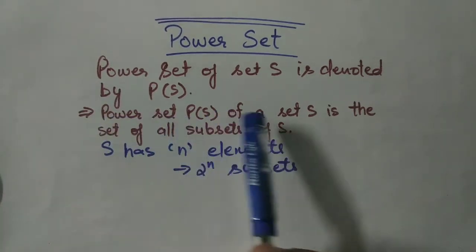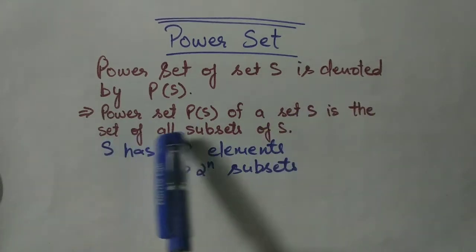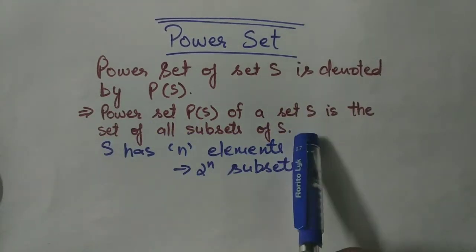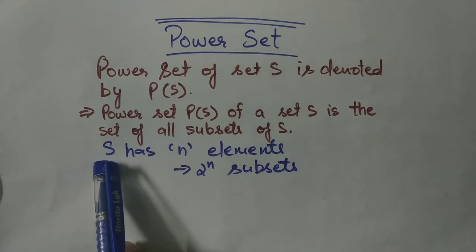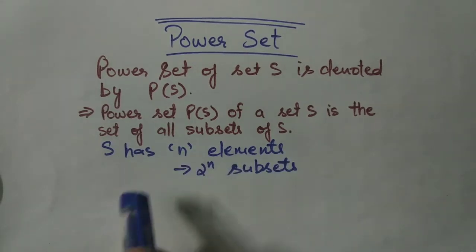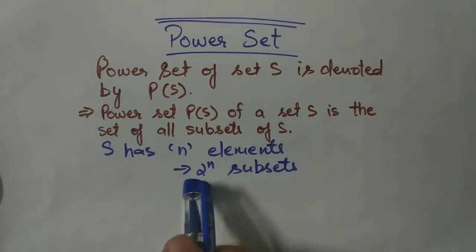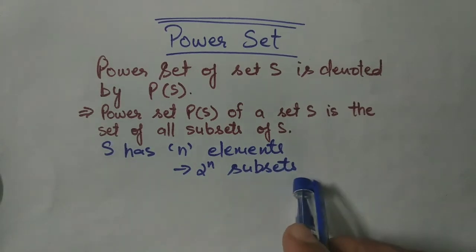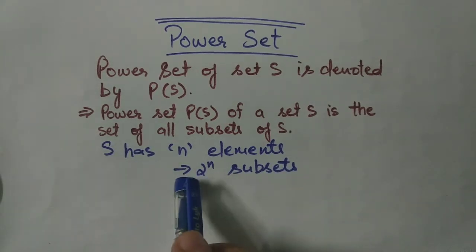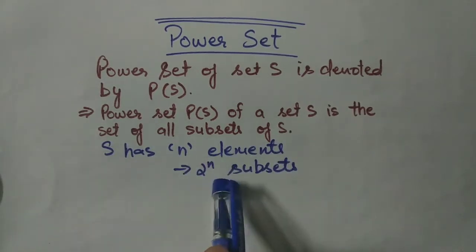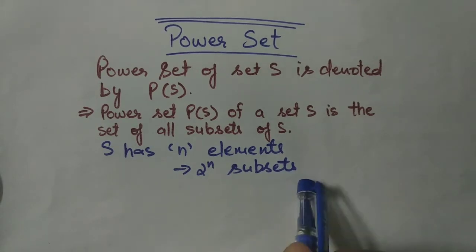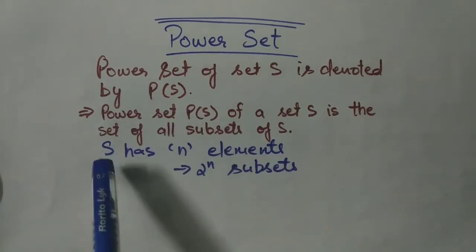The power set of set S is the set of all subsets of set S. Suppose there is a set S and it has n elements, then this set S will have 2 raised to power n subsets. And the set of all of these 2 raised to power n subsets is called power set of this set S.